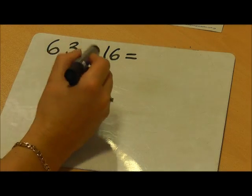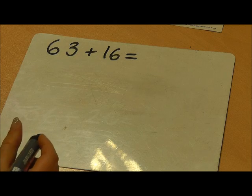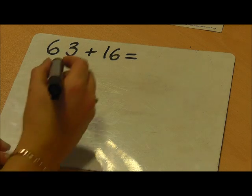When adding two two-digit numbers together, we can use an empty number line in the following way.